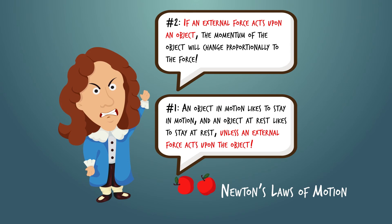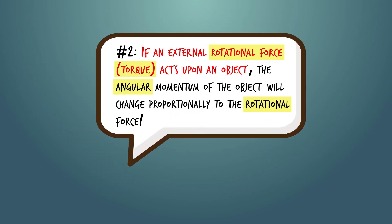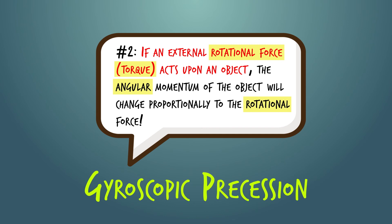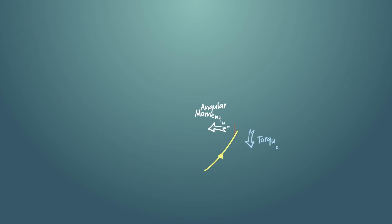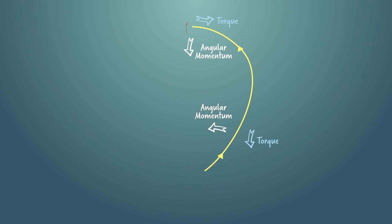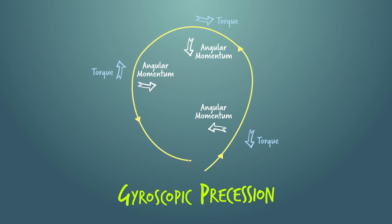The boomerang spins while the airplane doesn't, which creates a difference in lift force between the top and bottom of the boomerang, generating a rotational force called torque. Adapting Newton's second law for circular motion: if an external rotational force or torque acts upon an object, the angular momentum of the object changes proportionally to that rotational force. This effect is called gyroscopic precession. As the boomerang is thrown, the torque acts perpendicular to the angular momentum, changing the boomerang's direction. As the direction changes, the torque direction changes too, curving the path again — which is why a properly thrown boomerang curves in a circle and returns to the thrower.